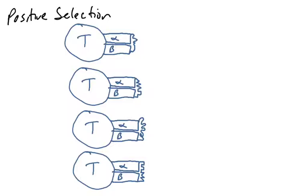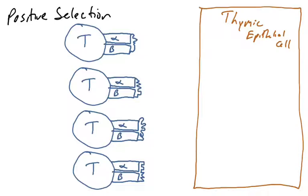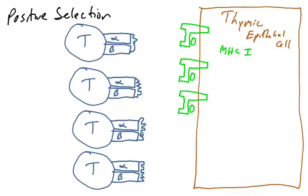These double positive T cells need to undergo positive selection. We have to screen them to see if they interact with our MHC molecules. This is going to involve cells in the thymus — thymic epithelial cells that help train the T cells. On these thymic epithelial cells you're going to find antigen presentation molecules: MHC class I molecules and MHC class II molecules on their surface.